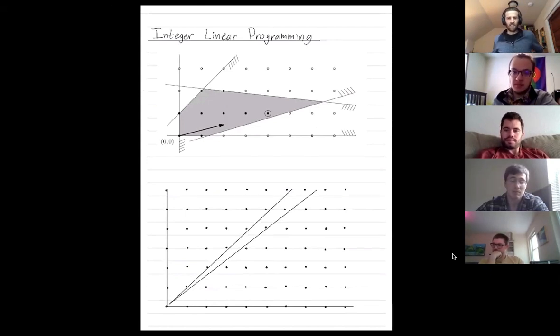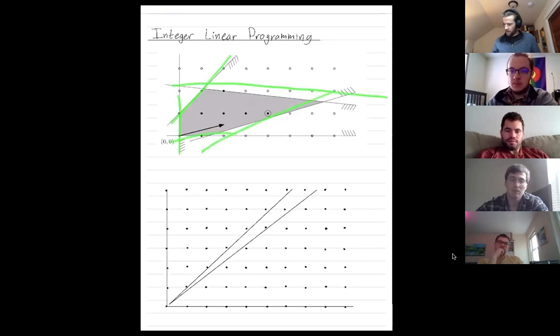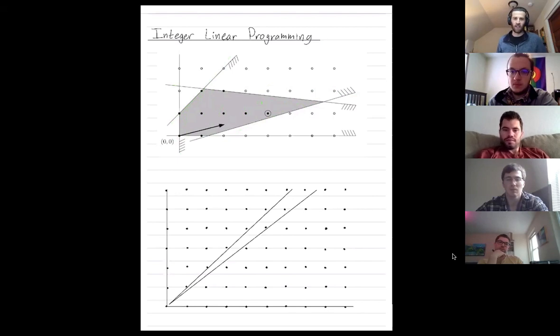We've seen already in linear programming, without the adjective integer in front, that you're given certain constraints, and you typically need to be on one side of those constraints, restricting you to something like this convex polygon here. And then you have an optimization direction. You're trying to find what's the point in my feasible region that maximizes this direction. And for this particular example, our optimal point would be this red point right there.